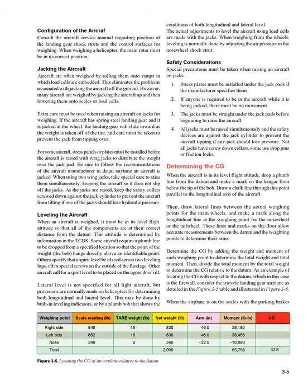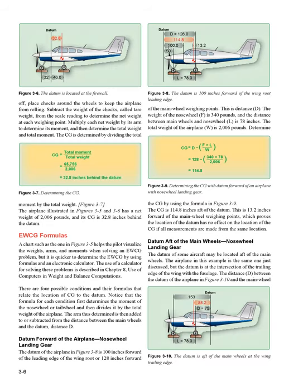As an example of locating the CG with respect to the datum — in this case the firewall — consider the tricycle landing gear airplane detailed in figure 3-5 and illustrated in figure 3-6. When the airplane is on the scales with the parking brakes off, place chocks around the wheels to keep the airplane from rolling. Subtract the weight of the chocks (called tare weight) from the scale reading to determine the net weight at each weighing point. Multiply each net weight by its arm to determine its moment, then determine the total weight and total moment. The CG is determined by dividing the total moment by the total weight. The airplane illustrated in figures 3-5 and 3-6 has a net weight of 2,006 pounds, and its CG is 32.8 inches behind the datum.